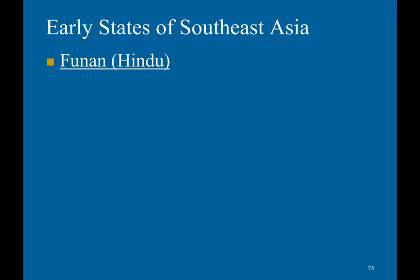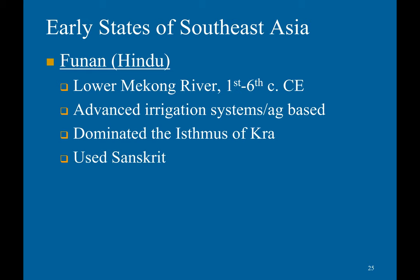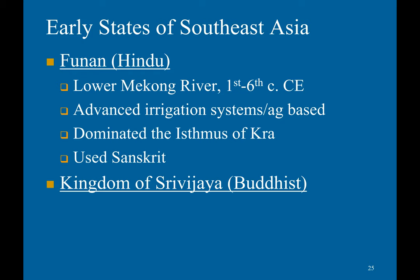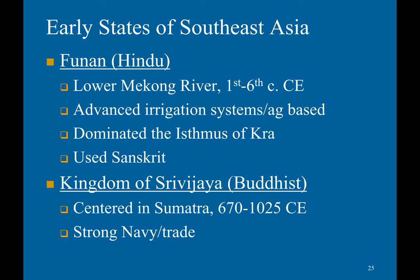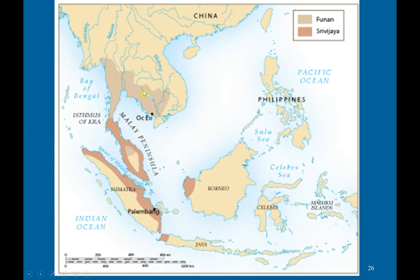One of the early states of Southeast Asia was Hindu Funan, which started in the lower Mekong River and ran from the 1st to 6th century CE. It had advanced irrigation systems, was agriculturally based, dominated the Isthmus of Kra, and used Sanskrit. There was also the Buddhist kingdom of Srivijaya, centered in Sumatra from 670 to 1025, which had a strong maritime trade. This map depicts some of the major Southeast Asian civilizations, including Funan and Srivijaya.